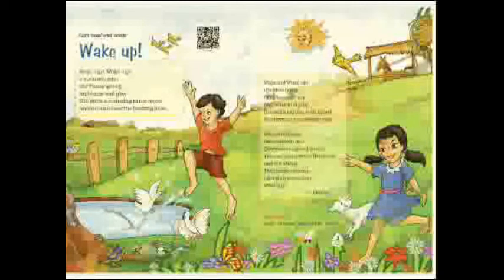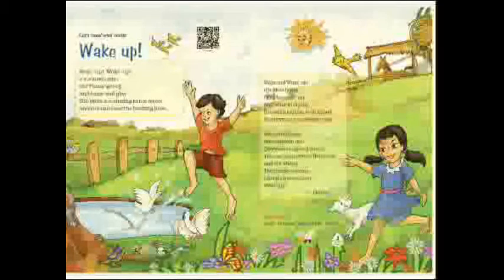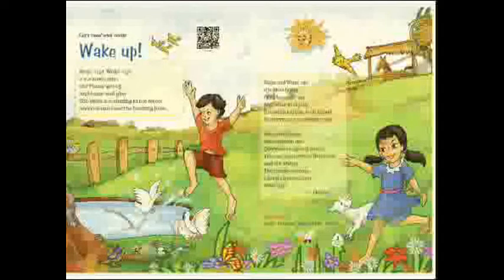Let's start reading the first stanza. 'Wake up, wake up, it's a lovely day. Oh please get up and come and play. The birds are singing in the trees and you can hear the buzzing bees.' Now, lovely means a beautiful day. Buzzing means making a low sound, like the sound honey bees make. In this stanza the poet is asking the children to wake up and enjoy the beautiful day — to get up early and go out and play. The poet talks about birds chirping in the trees and bees buzzing in the garden.